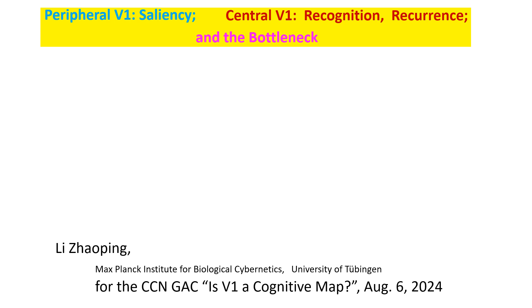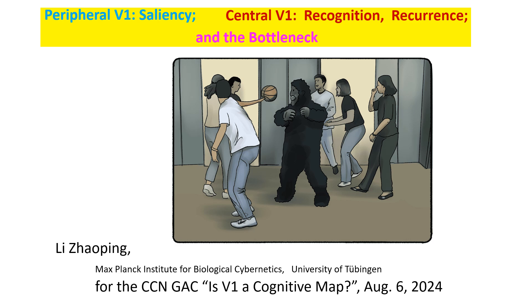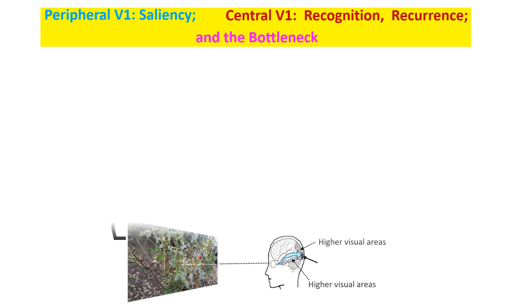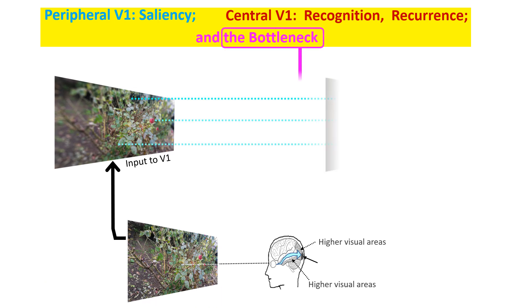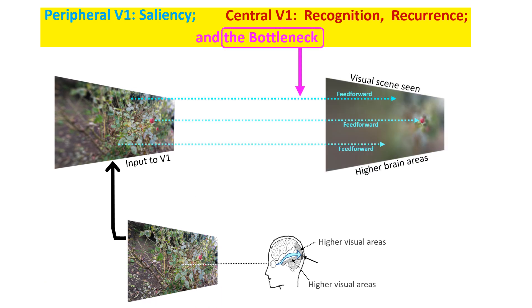I argue for multiple roles for V1, motivated by the attentional bottleneck that makes us inattentionally blind. The standard model of V1 sees V1 as more or less passive outside the more important and complex tasks for vision. Most ideas about V1 ignore the information bottleneck — we perceive only a tiny fraction of visual inputs, mainly the inputs within the attentional spotlight.